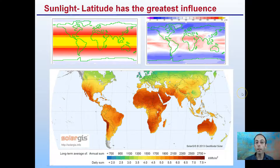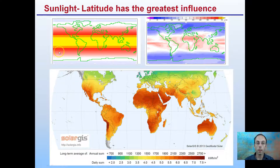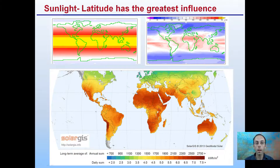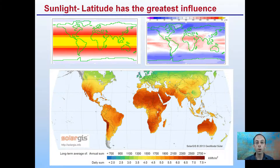Now, sunlight — as I said, latitude has a great influence on this. Looking at the amount of sunlight that different regions get, we might think it would be a nice easy correlation where the equator gets the most and the poles get the least. There is some slight variance, but latitude does have the greatest influence. The closer you are to the equator, the more direct sunlight you'll receive over the course of the year.